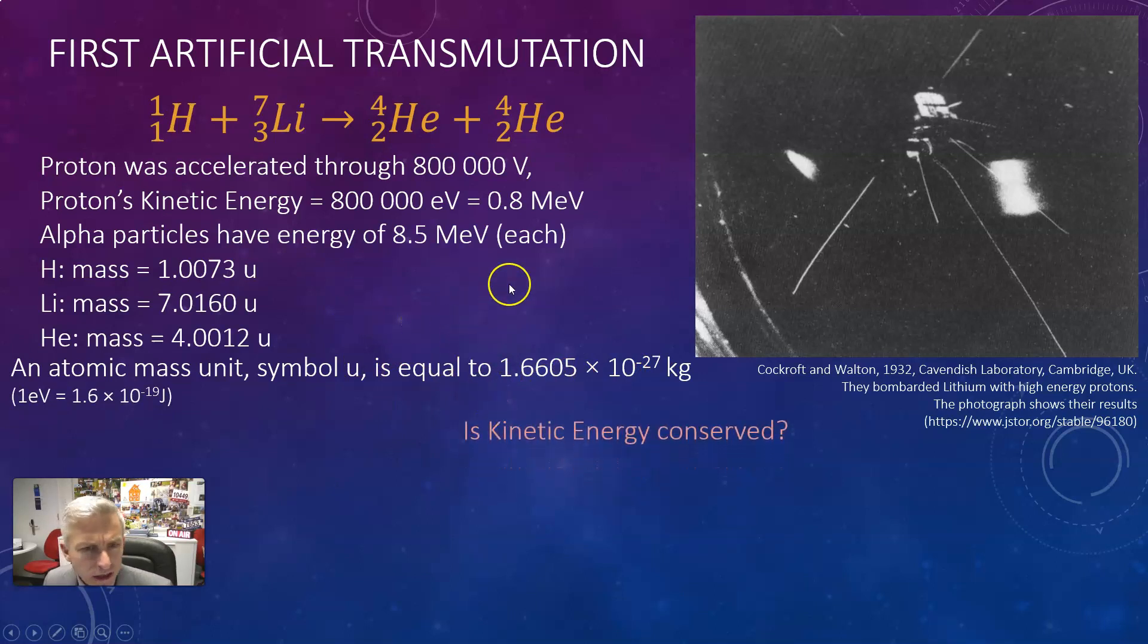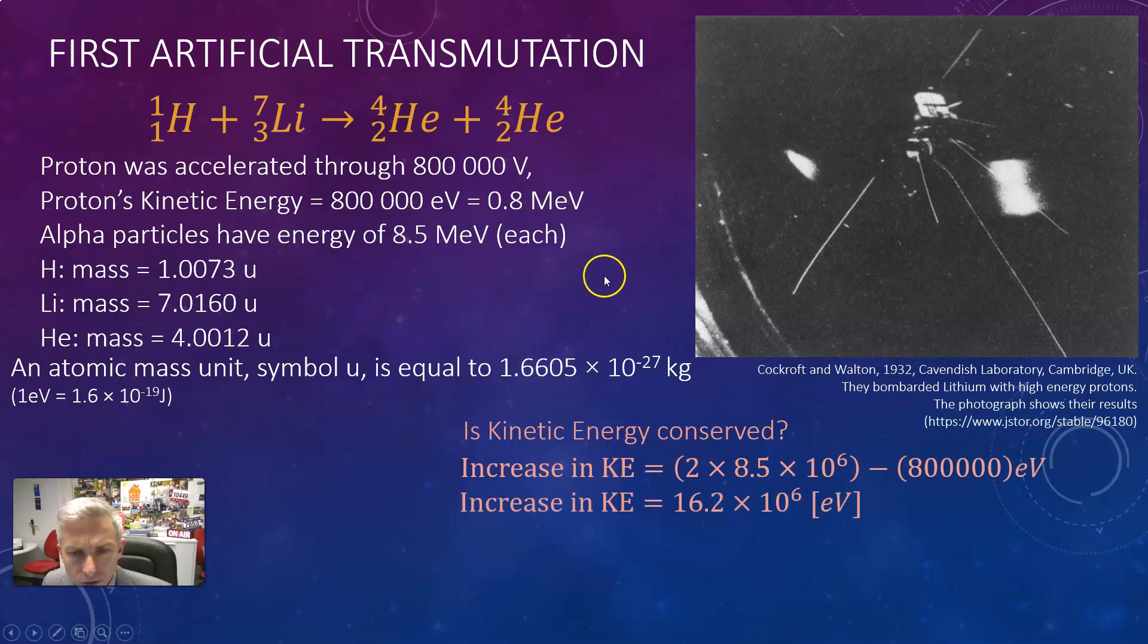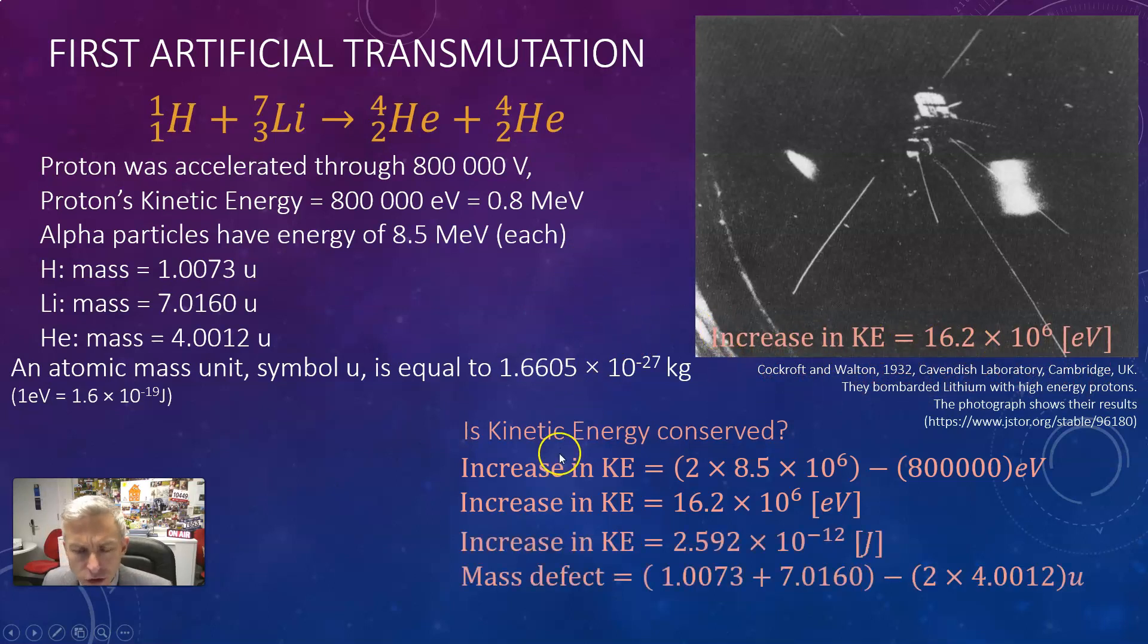Well is kinetic energy conserved? Clearly not. I've gained two lots of 8.5 MeV and I've only started with 0.8 MeV so I've got an increase of 16.2 mega electron volts. Let's just put that number here and I've converted that number into joules.